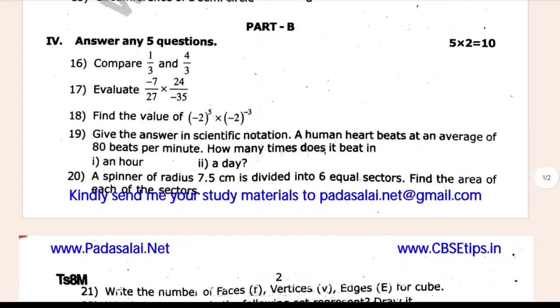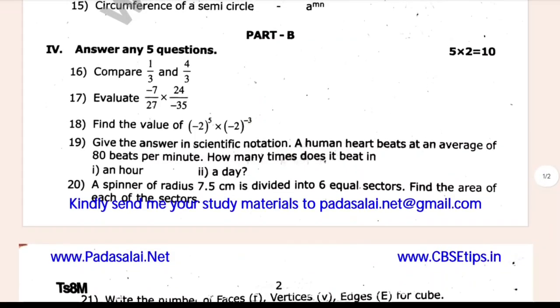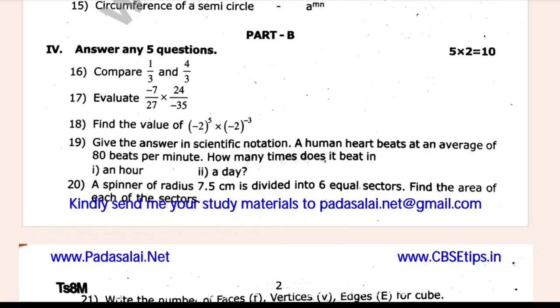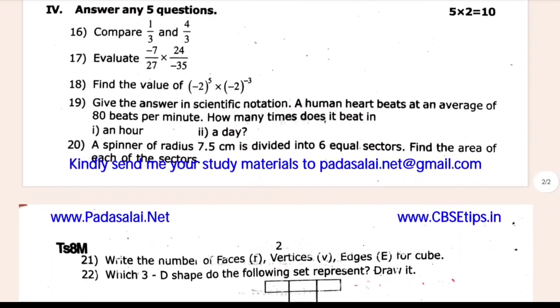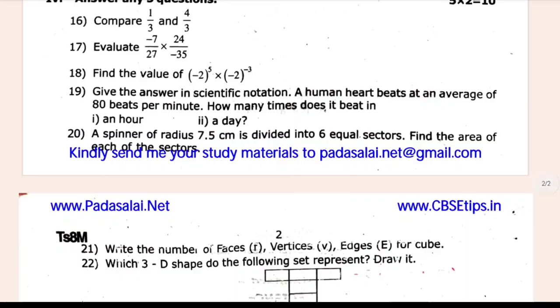Compare 1/3 and 4/3. Evaluate -7 divided by 27 into 24 divided by -35. Find the value of -2 power 5 multiply -2 power -3. Give the answer in scientific notation. A spinner of radius 7.5 centimeter is divided into 6 equal sectors. Find the area of each of the sectors.